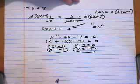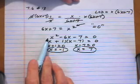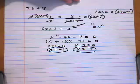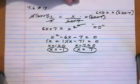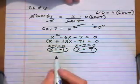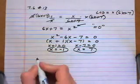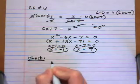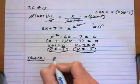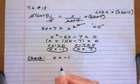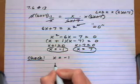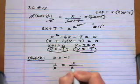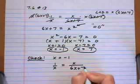Those are the solutions for the quadratic equation we got from solving the rational equation. Now we always want to check our solutions, so let's make sure they both work. For x equals negative 1, we substitute into the original equation: 1 over x equals x over 6x plus 7.